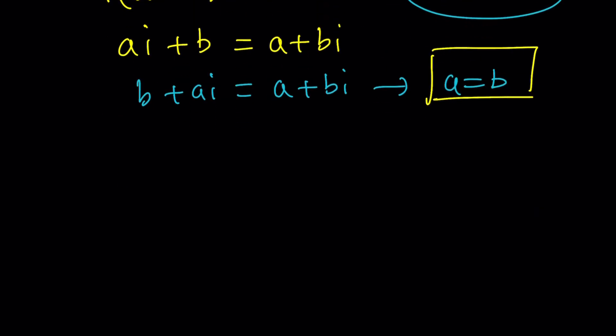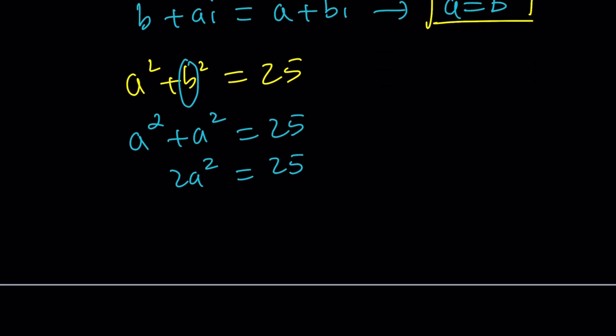This is good because a equals b gives us really good information, especially when we have another equation. So let's go ahead and put these two together. A squared plus b squared was 25 from the second equation, the absolute value. And we now know that a is equal to b. Let's replace b with a. That gives us 2a squared equals 25. And then a squared equals 25 over 2.